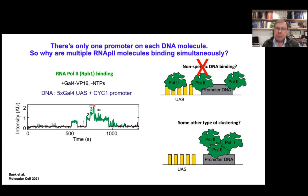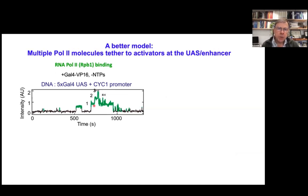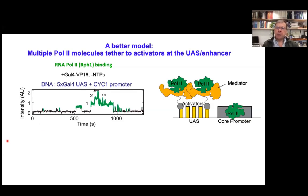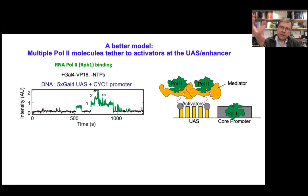You might think this is non-specific DNA binding, but the binding is completely activator-dependent, and we have a ton of competitor DNA in the reaction. We also considered condensates, but the most likely explanation — which we still believe — is that the polymerases are being tethered to the template via the activators. On this template we have five Gal4 UAS binding sites, most of which tend to be occupied at any given time, so each activator can bring in a Mediator-polymerase complex.